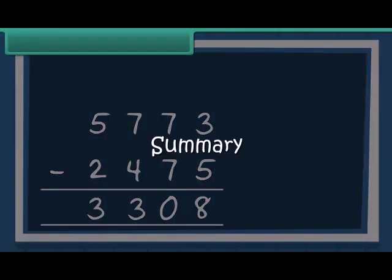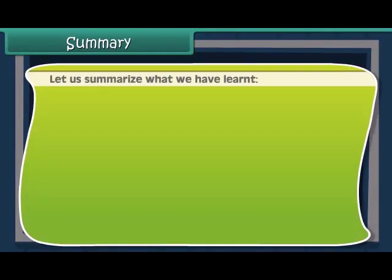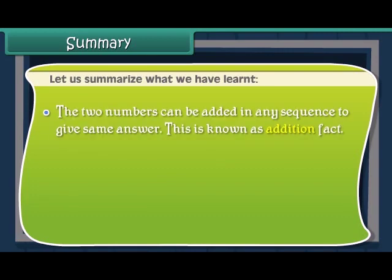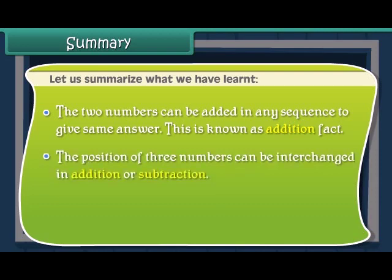Summary. Let us summarize what we have learned. The two numbers can be added in any sequence to give the same answer. This is known as addition fact. The position of three numbers can be interchanged in addition or subtraction.